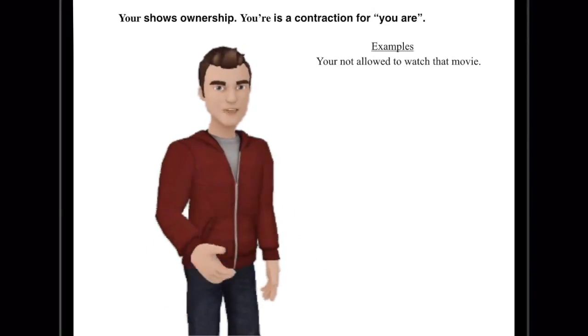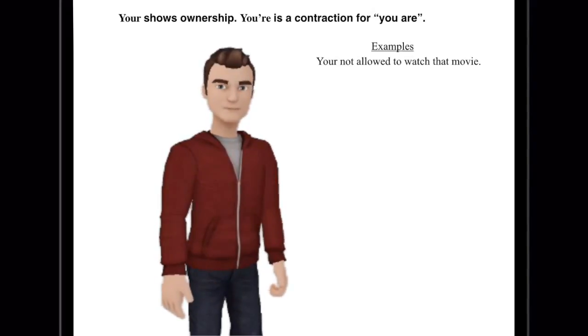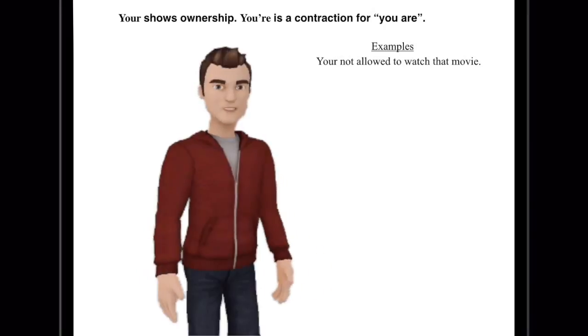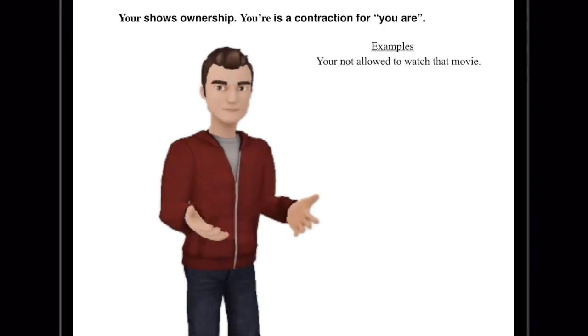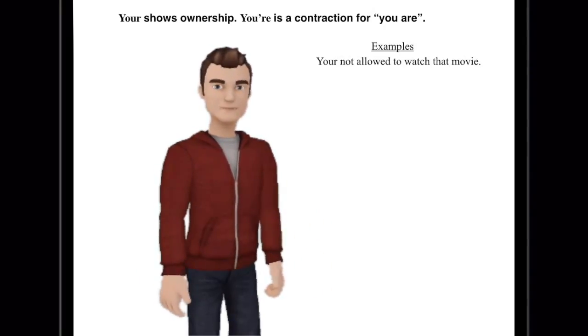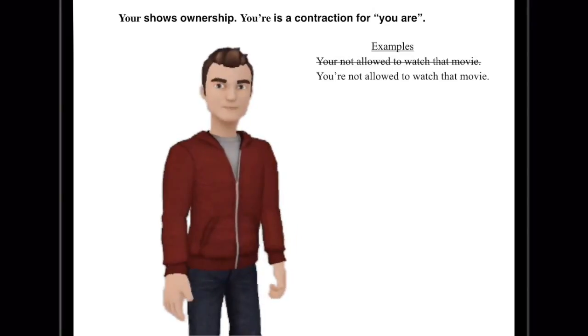In our first example, we have 'you're not allowed to watch that movie.' There we have an ownership kind of 'your,' but instead we need 'you apostrophe R-E' — you're not allowed to watch that movie.